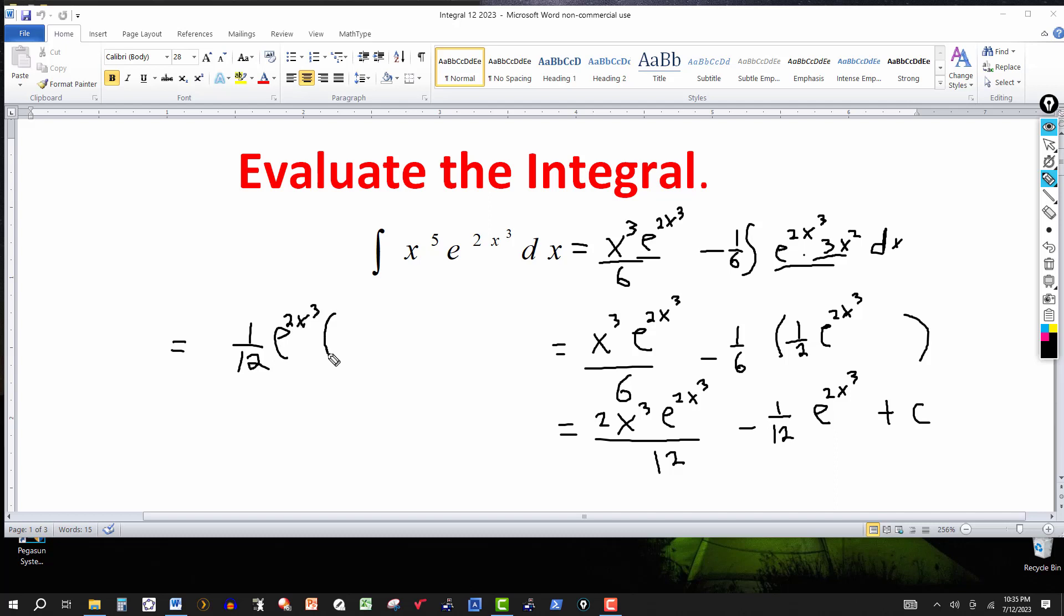Then I'll have in parentheses then, 2x cubed from this one, factoring out the 1/12, and the e to the 2x cubed gives me minus 1, plus the constant of integration.